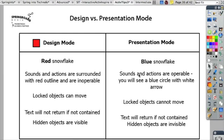When I go into Design Mode, I'm going to have the red snowflake, and my sounds and actions are going to be surrounded with a red outline, but they're going to be inoperable. This way I can move them around the page. Locked objects can move in Design Mode, texts will not return if contained, and hidden objects are visible.